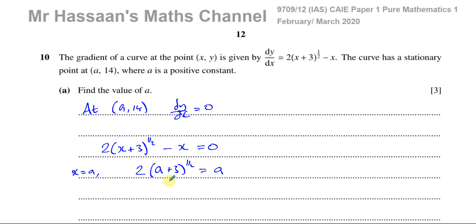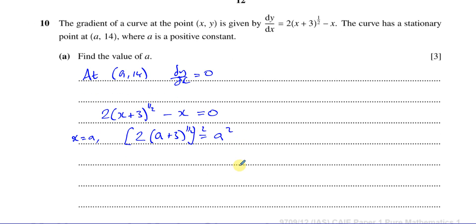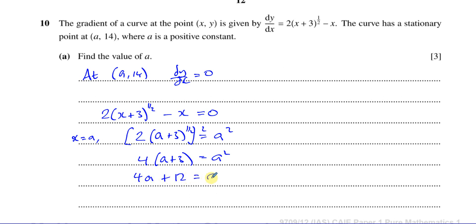To solve this equation, I want to get rid of this square root. Something to the power of a half is like the square root of that thing. So if I square both sides, I'll get rid of that square root. This gives me 4 times (a + 3) — since 2 squared is 4 and (a+3) to the half becomes (a+3) — equals a squared.